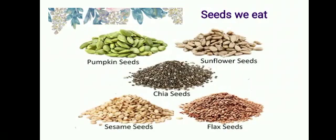Now the seeds which are edible. Pumpkin seeds, sunflower seeds, chia seeds, sesame seeds and flax seeds can be eaten by us. Seeds are a rich source of food for human beings and also for animals. Most of the cereals like wheat, rice, pulses, maize, millet etc. are the seeds.